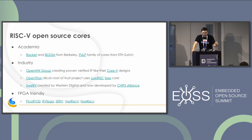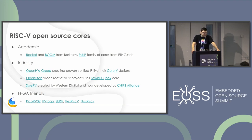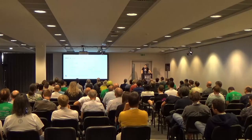With RISC-V, there are a lot of open source cores available. Some come out of academia — like Rocket and BOOM from Berkeley. At ETH Zurich, there's a team called PULP that has produced a lot of open source cores: some low power tiny ones, and also larger ones capable of running Linux.